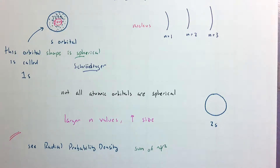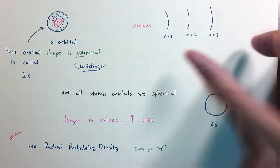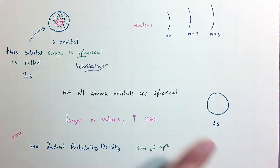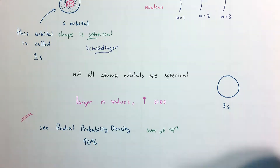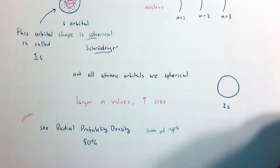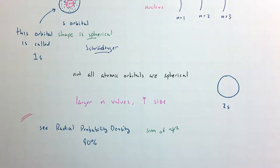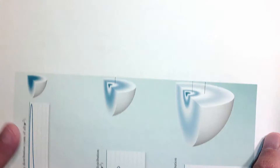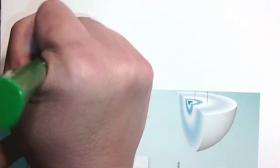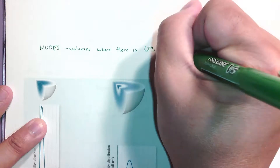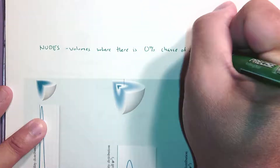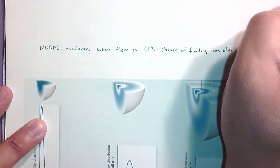In terms of one more review: these orbitals represent a 90% probability — they carve out a shape, a volume where 90% of the time you can find an electron. Now here's the new stuff. Nodes — nodes are places or volumes where there is 0% chance of finding an electron.